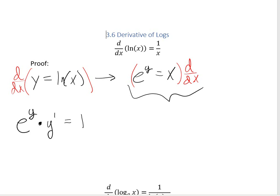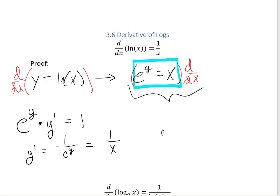Now we're going to solve for y prime so that we can actually get the derivative. This is going to become y prime equals 1 over e to the y. But I wanted to solve the derivative with respect to x, not y. If we look back up here, e to the y is equal to x, so I can rewrite this as 1 over x. What we just proved is that if you take the derivative of the natural log of x, it will equal 1 over x.